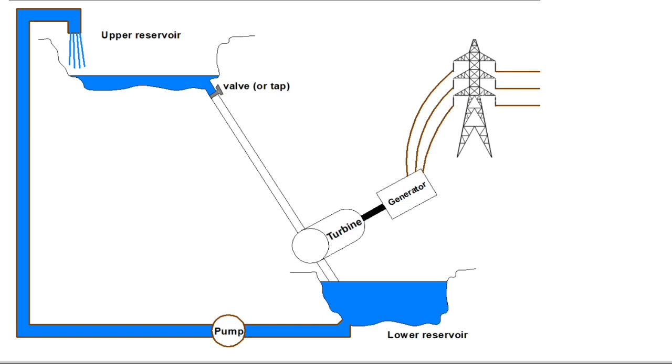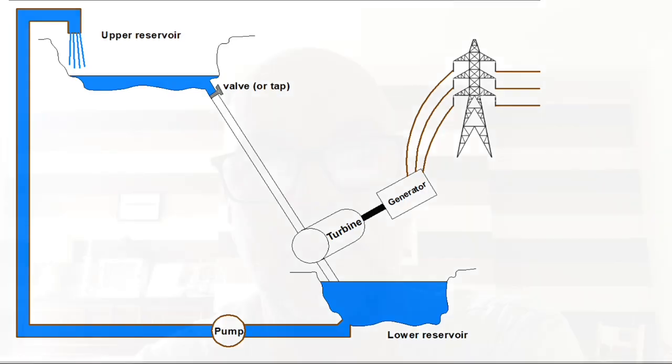Quite often at nighttime when less energy is needed because most people are in bed, too much electricity is generated. And this surplus electricity is used to power that pump that pumps the water back up to the top reservoir from the lower reservoir. Therefore, this energy that's already being generated is stored in the form of the water in the upper reservoir, and that can be released again to generate more electricity at peak times.